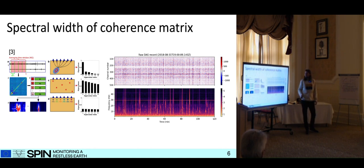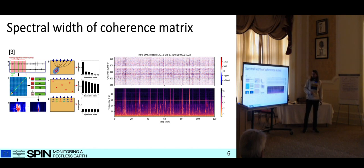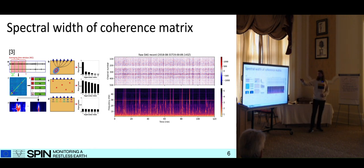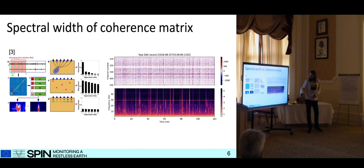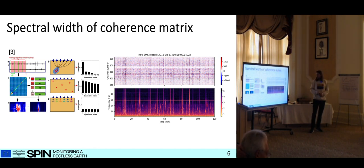Here's the method briefly outlined. For a time window, we compute the cross-spectral density matrix — in my case I used the coherence matrix — and we decompose this into eigenvalues and eigenvectors. From the distribution of the eigenvalues we can say something about our sources. Above is the depth record and below is the spectral width, which you can think of as a spectrogram of the whole array. You can see frequency on the y-axis and time on the x-axis, and we see it's really full of events everywhere.